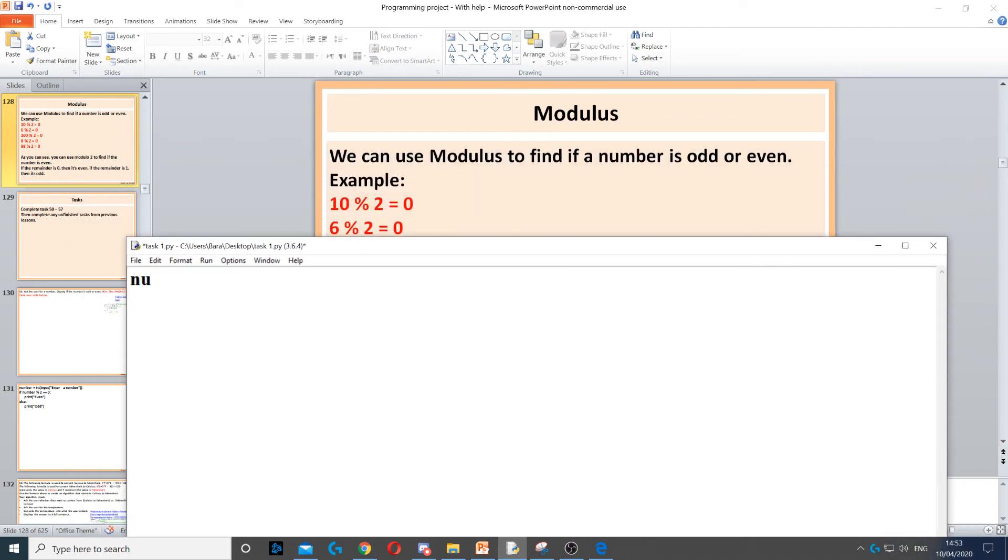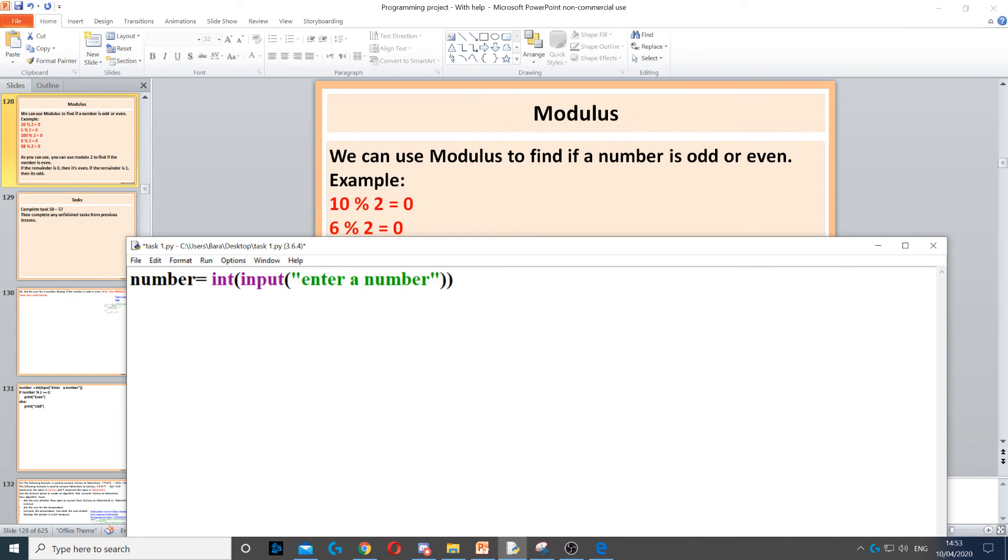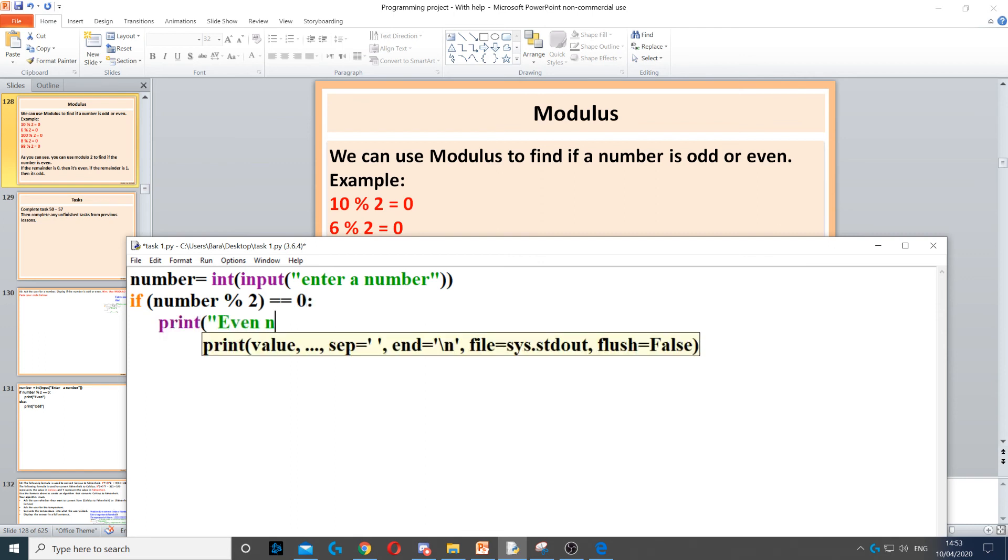So what I can do is I can ask the user for a number. So number equals int and then input to ask, enter a number. Ask for a number. And I can use if, let's say number modulus 2. So if that number modulus 2 is equal to 0, then we know that it's going to be an even number. So even number.